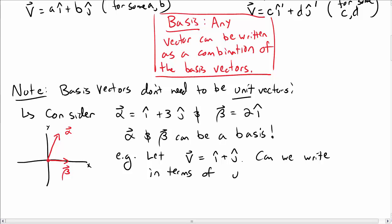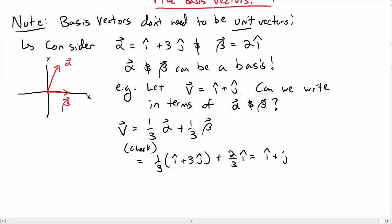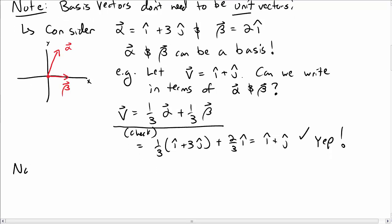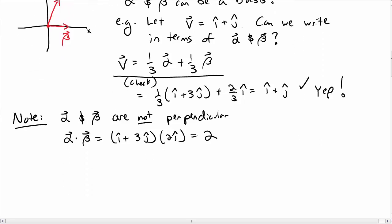If I let v = i-hat + j-hat, can I write this in terms of alpha and beta? Sure — 1/3 alpha plus 1/3 beta works. Let's check: 1/3 alpha is (1/3)(i-hat + 3 j-hat) and 1/3 beta is (1/3)(2 i-hat), so combining we get i-hat + j-hat. So this is a way of writing v in terms of the alpha and beta basis. Note that alpha and beta aren't even perpendicular — their dot product is 2.